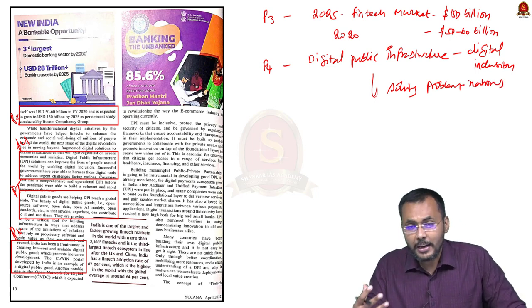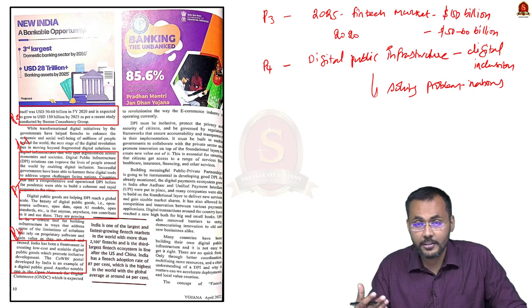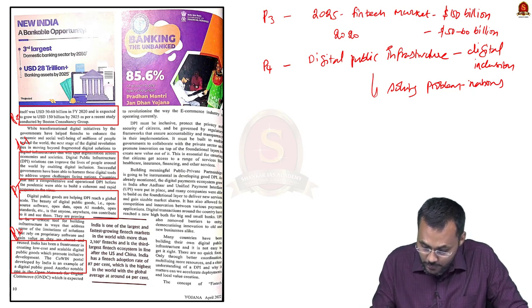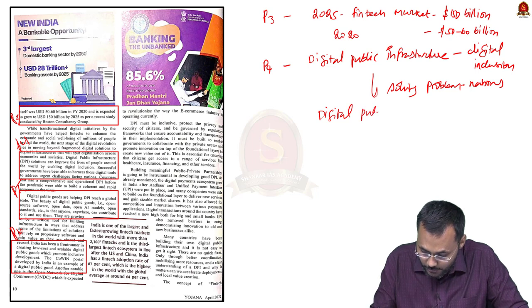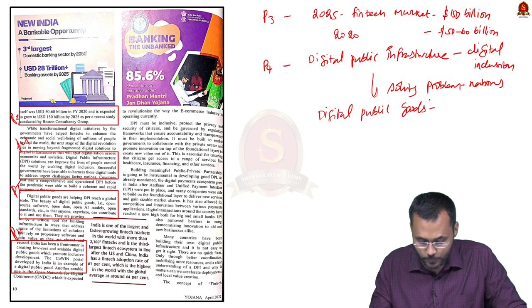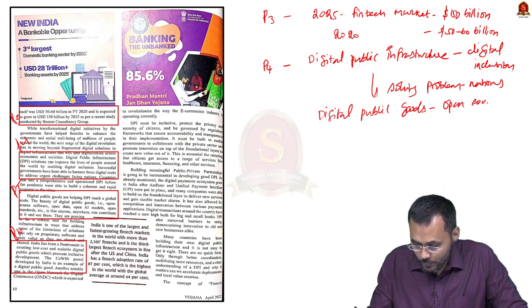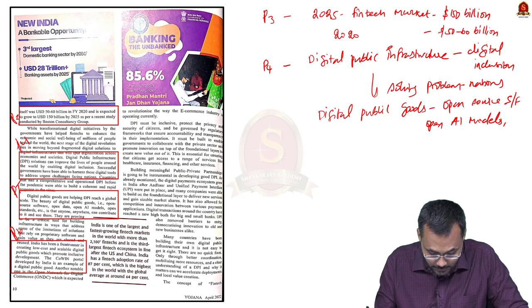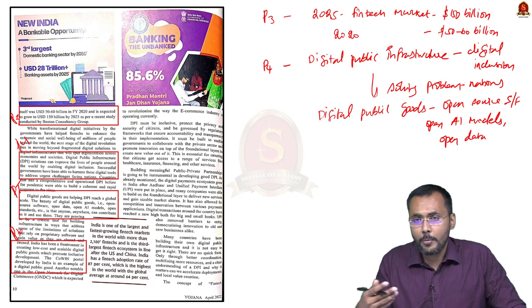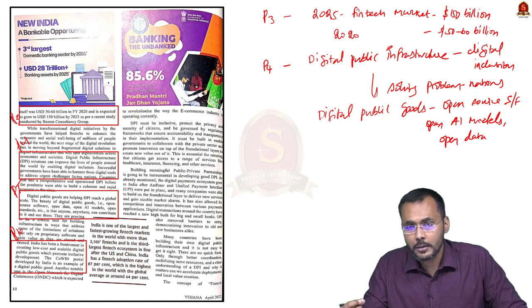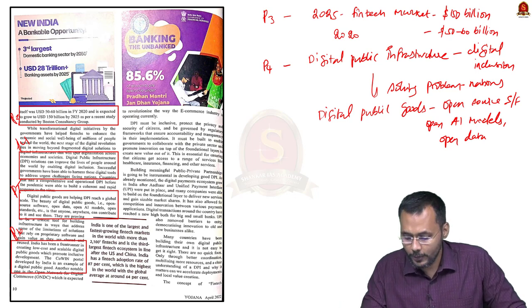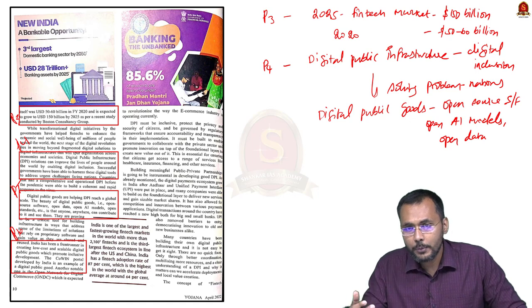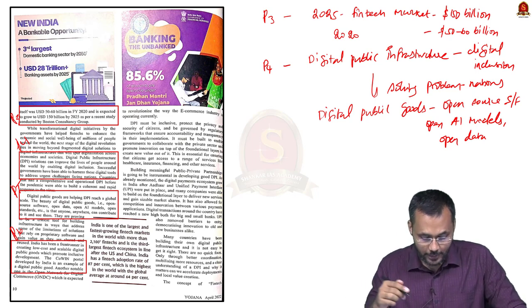The problems of the nation can be easily addressed through digital public infrastructure. This brings in the concept of digital public goods. Digital public goods consist of open-source software, open AI models, and open data. The term 'open' means it is on a common platform, not proprietary. When you create open-source software and open AI models, those all come under digital public goods, which can be used in digital public infrastructure to solve national problems.